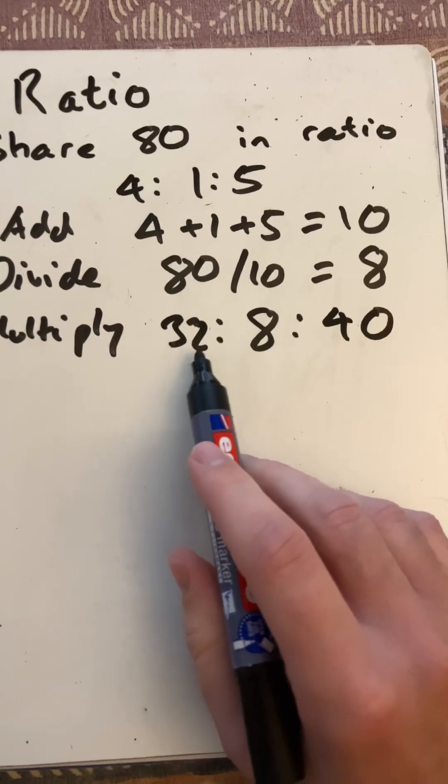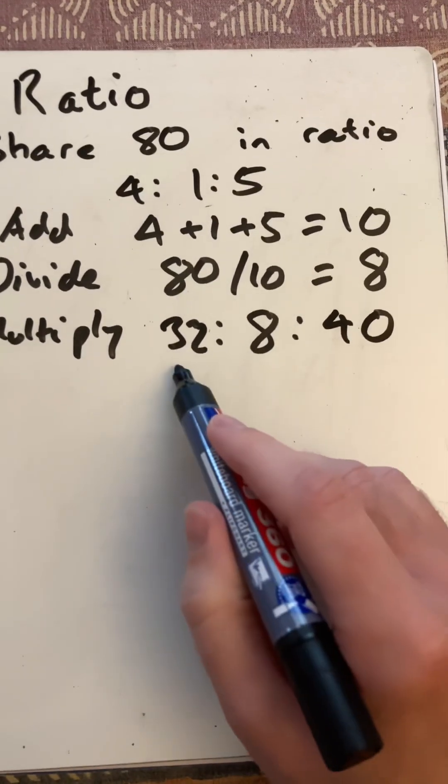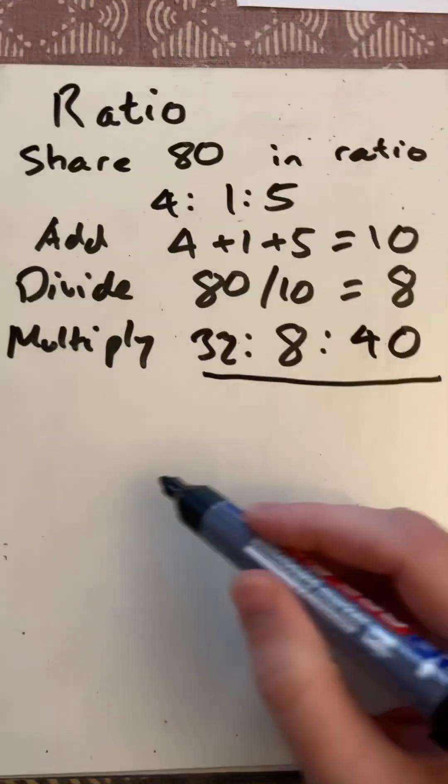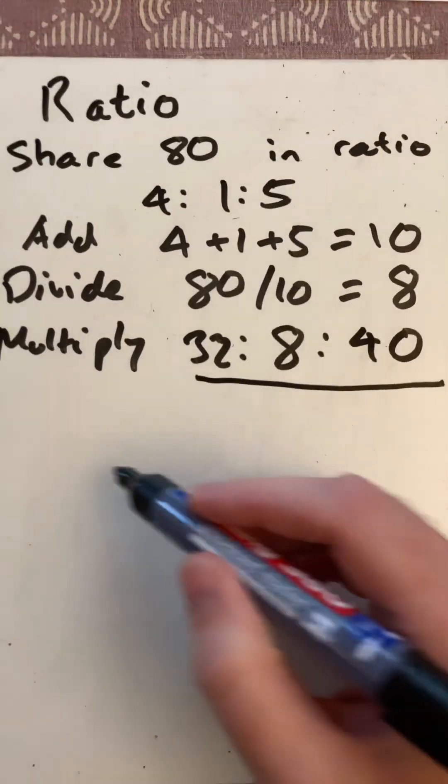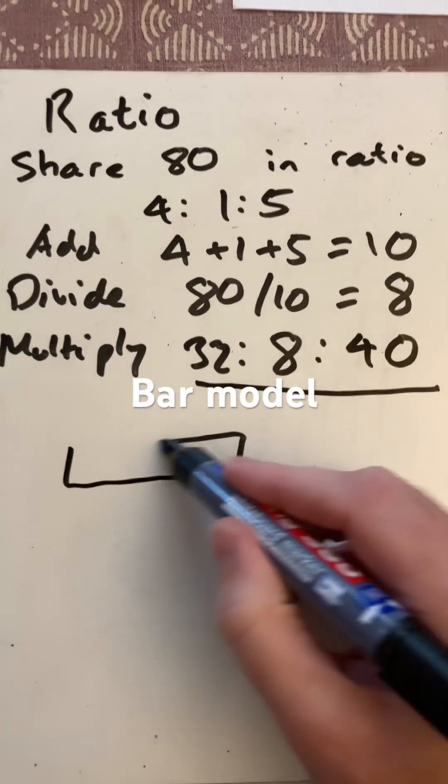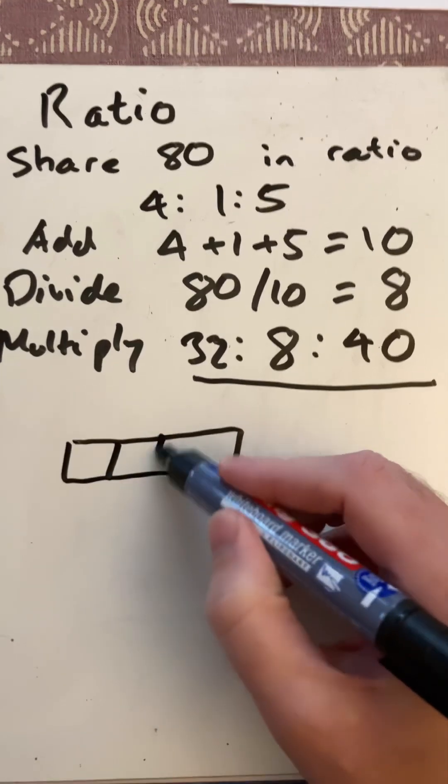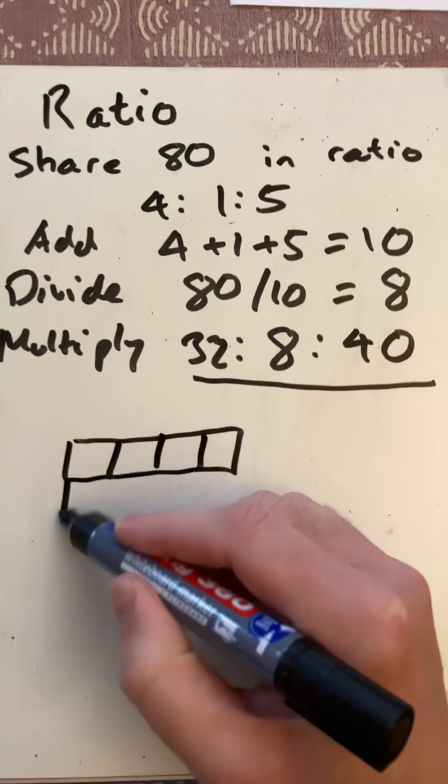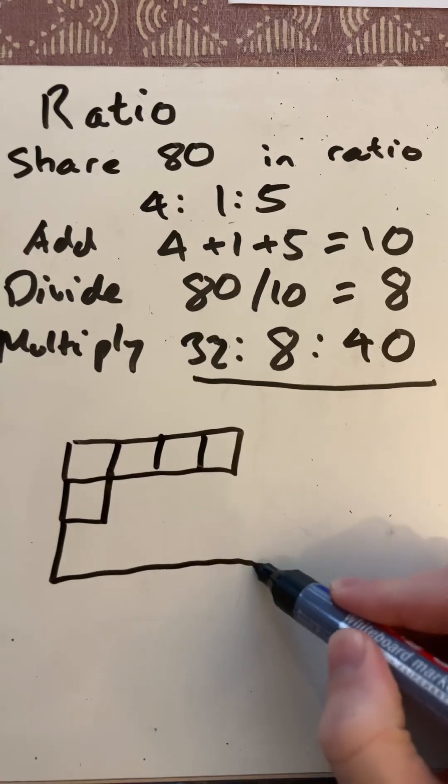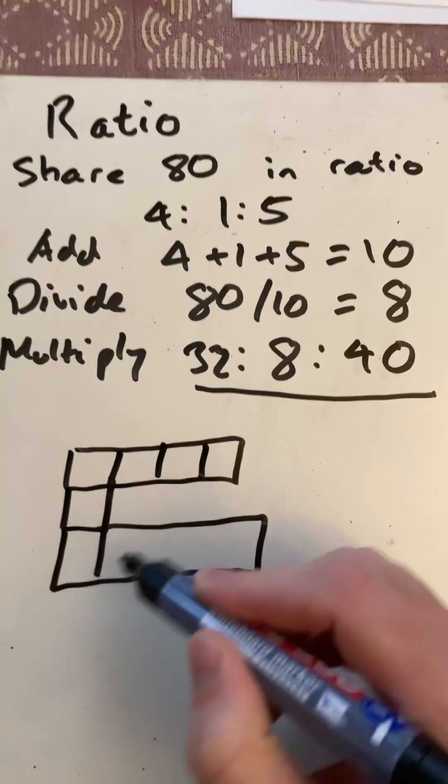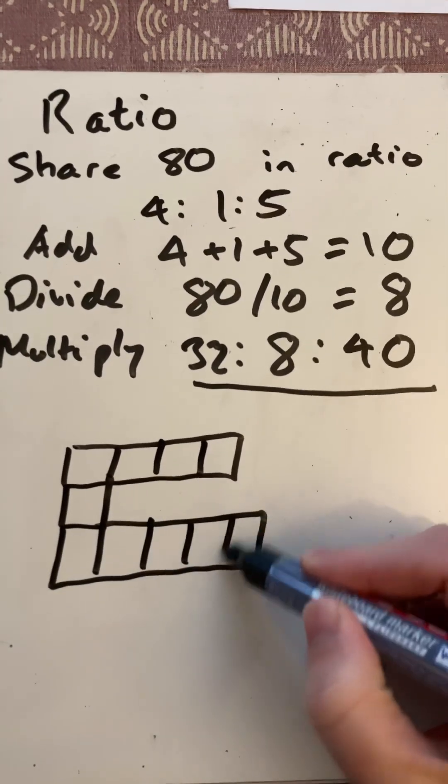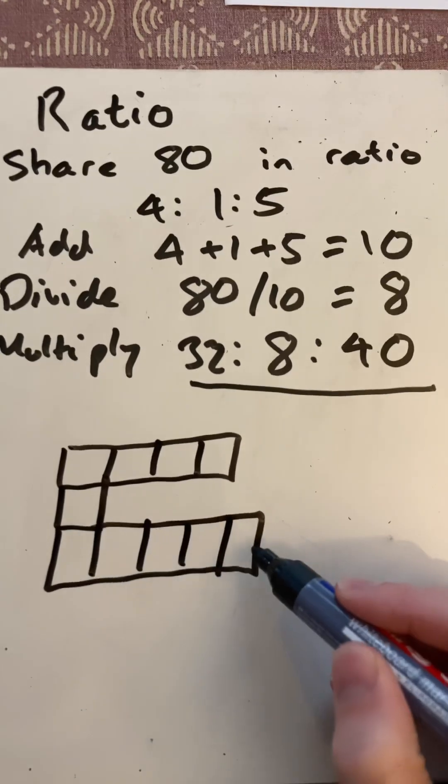Now some people prefer the bar model approach. I'm going to draw bars: 4, 1, and then 5.